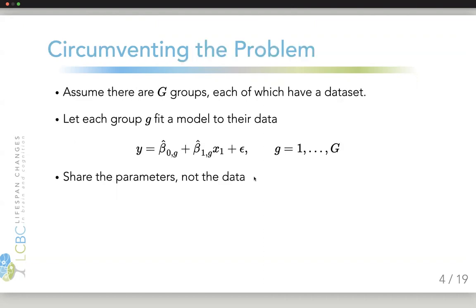One way of circumventing this problem is by doing a meta-analysis. For example, if there are capital G different groups, each of which has a dataset, we can let each group G fit the model to their data and get some parameter estimates, and then we can share the parameters rather than sharing the data, and find the joint estimates as a weighted sum of the individual estimates.